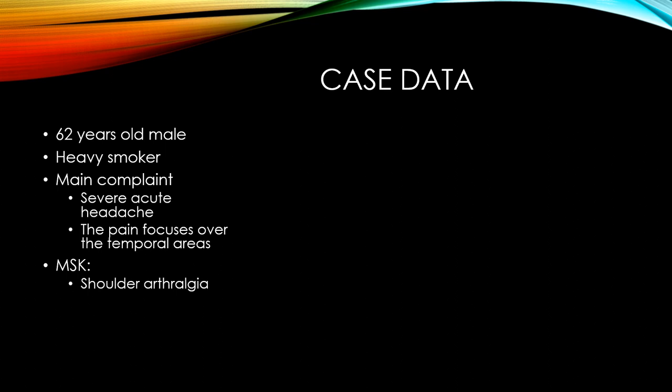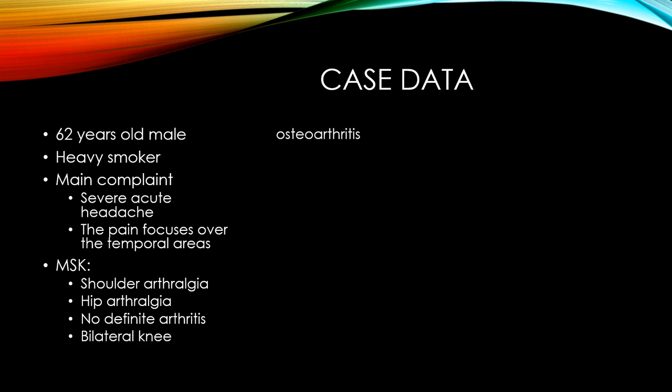Musculoskeletal findings: shoulder arthralgia, hip arthralgia, no definite arthritis. So shoulder arthralgia with hip arthralgia but with no definite arthritis, with bilateral knee osteoarthritis which may be due to age.